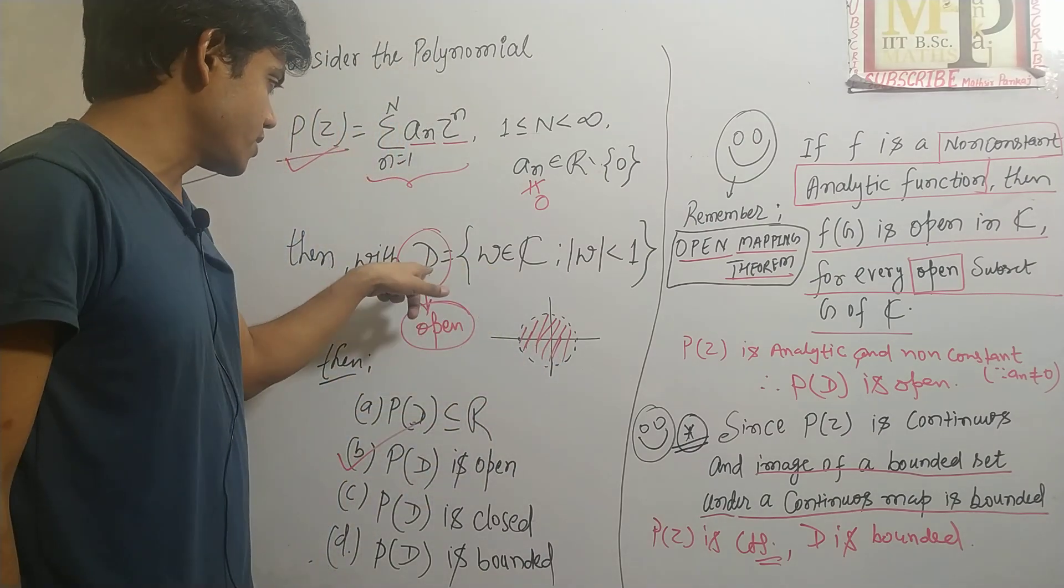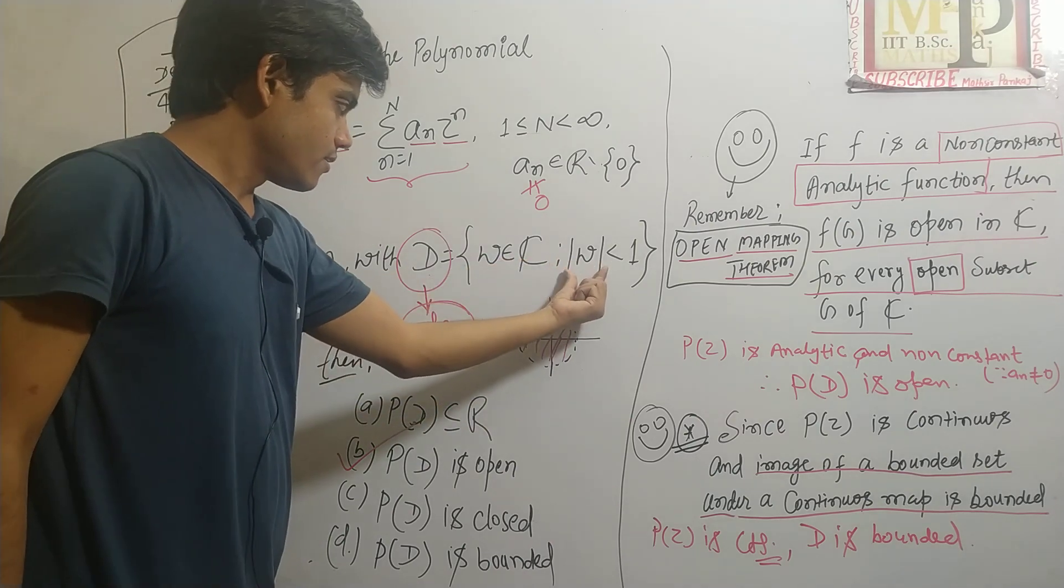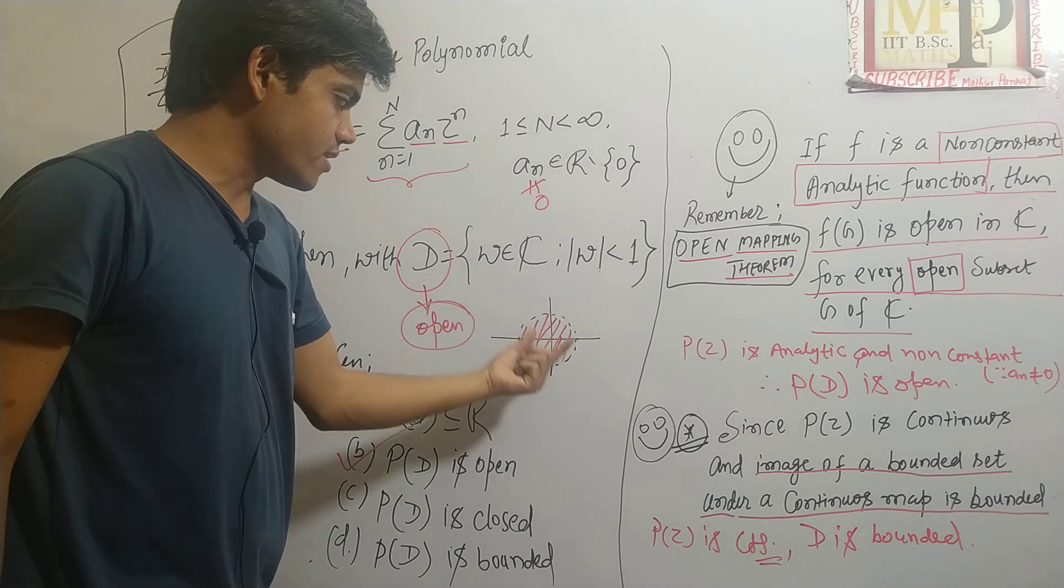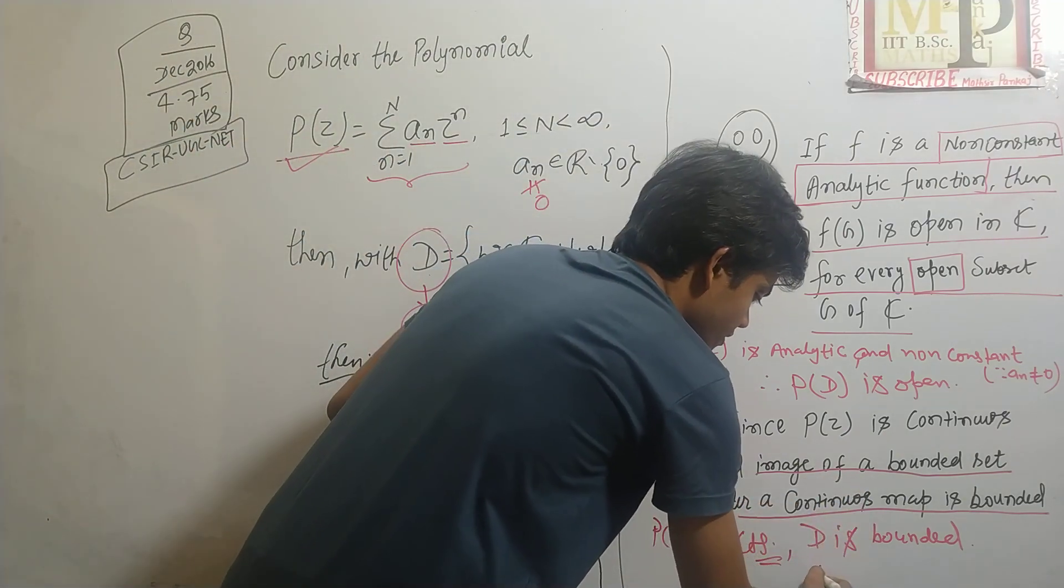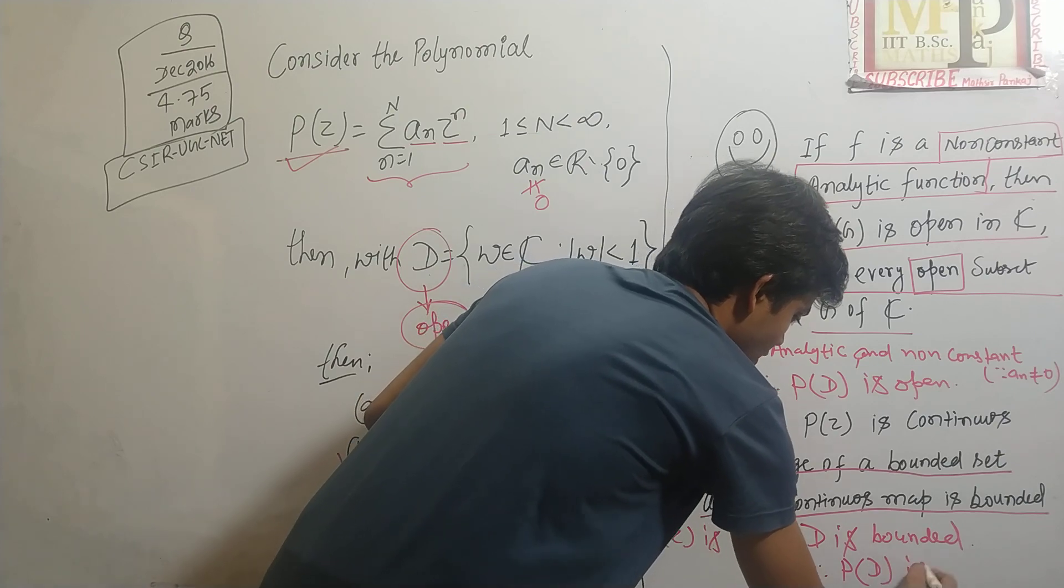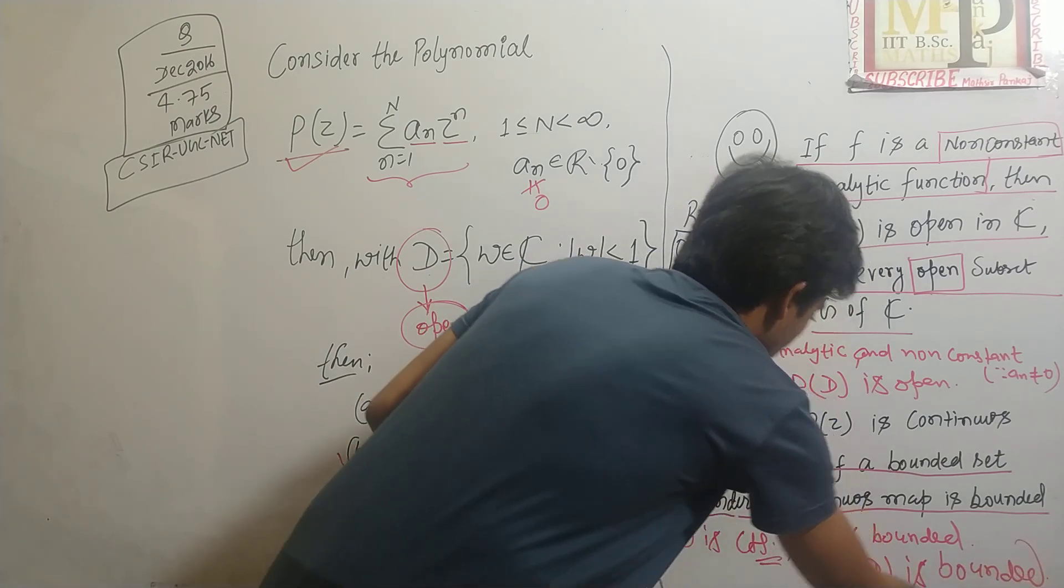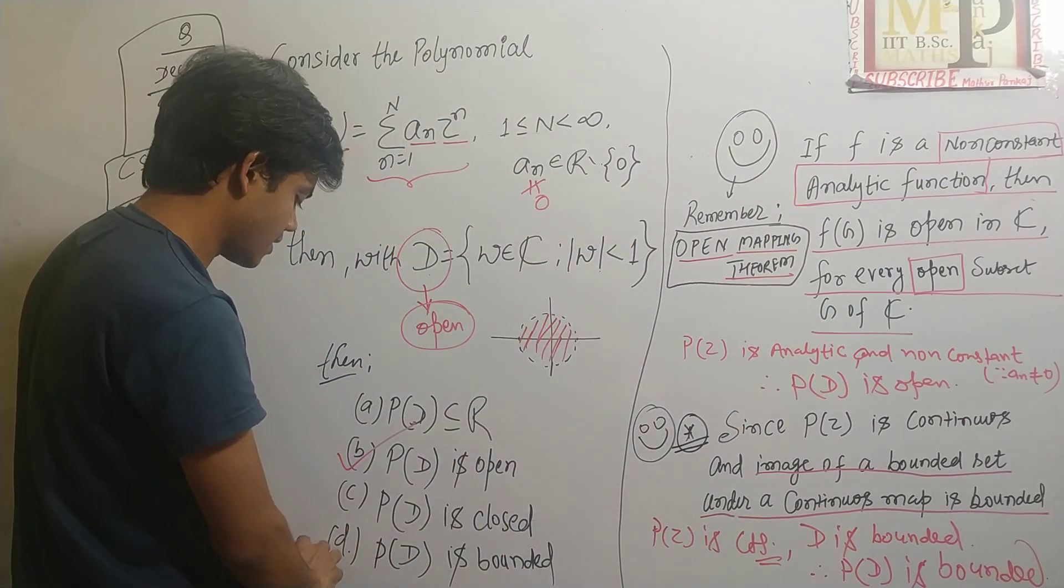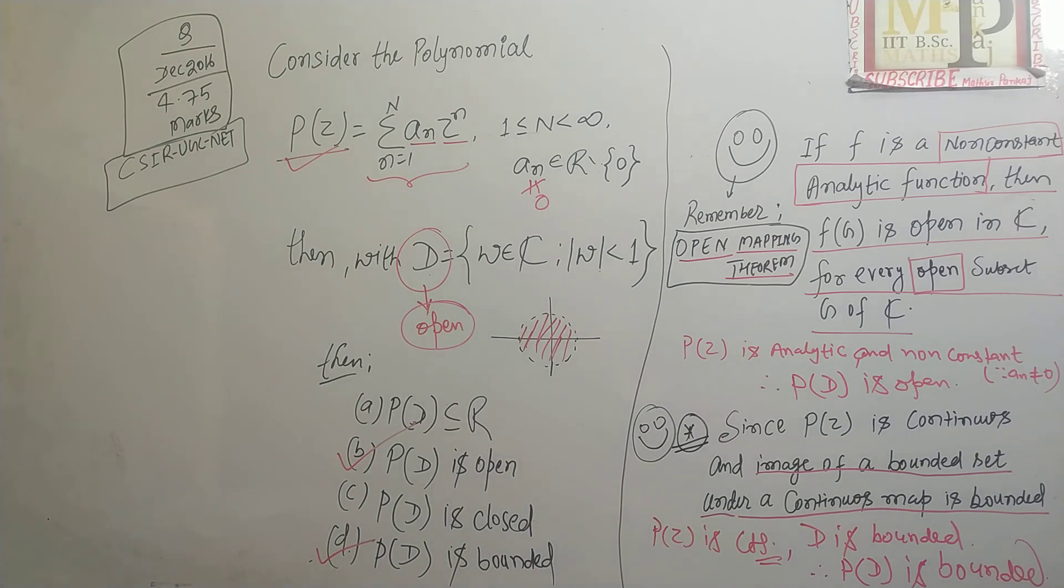Because it contains all the points inside this circle. Modulus of W is less than 1, so this is bounded. And as P(z) is continuous and D is bounded, therefore P of D is bounded as well. So you have two correct options: P of D is open and P of D is bounded. Option B and D is the correct answer.